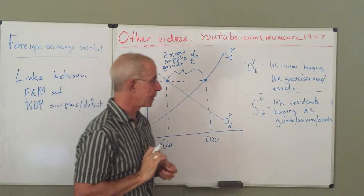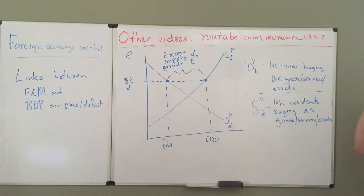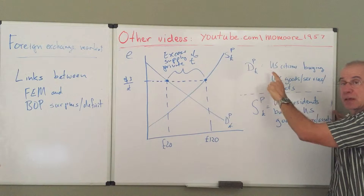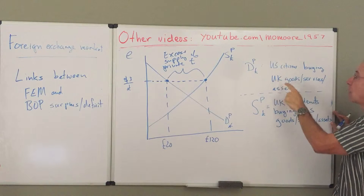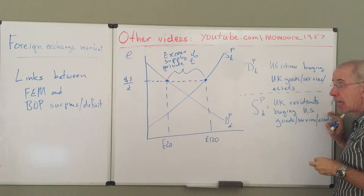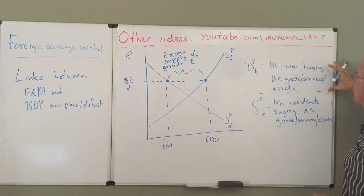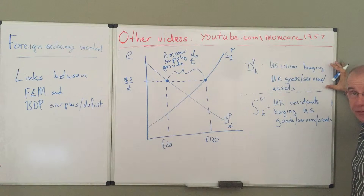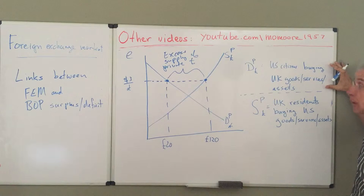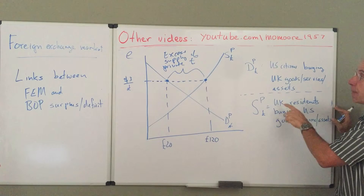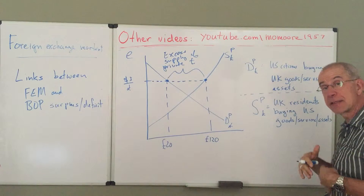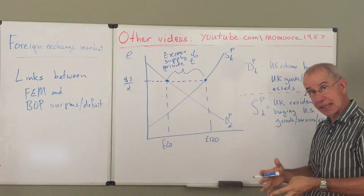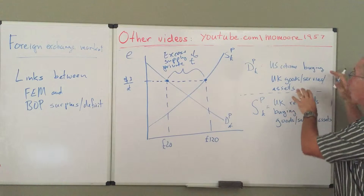But I want to peel back a little bit the demand and supply and link that to the balance of payments accounts. As we talked about before, the private demand for pounds reflects UK citizens buying UK goods, services, and assets. From the British standpoint, that is basically various credits — the credit side, the export side of the balance of payments. So the demand for pounds of 120 pounds at this exchange rate reflects the amount of pounds needed by American citizens who want to buy British stuff.